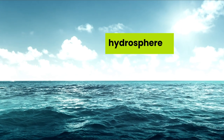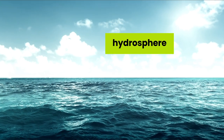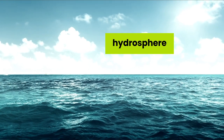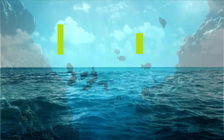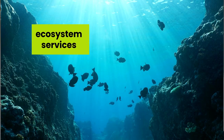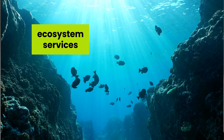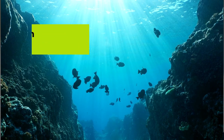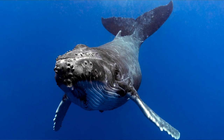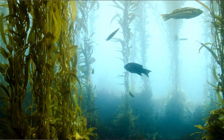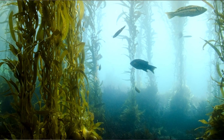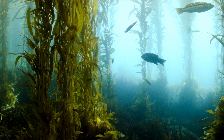The ocean is a big part of our hydrosphere — the water component of our planet — which provides us with ecosystem services. These are jobs that the environment does naturally for us. The ocean is really important to the water cycle, provides us with food, is a habitat for whales, kelp and sea otters, influences the climate, and is a great place to swim.